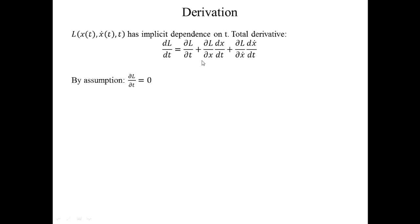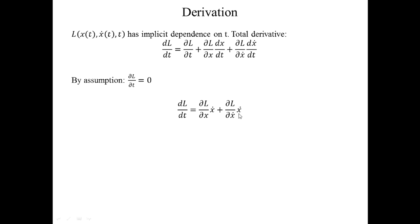By assumption in this problem, the Lagrangian does not have an explicit dependence upon t, so the partial derivative of L with respect to t is zero. That means the first term vanishes. It's important to distinguish this explicit partial from the total derivative — no t's appear directly in the Lagrangian, so we set that equal to zero. We also recognize that dx/dt equals ẋ and dẋ/dt equals ẍ.